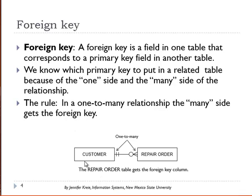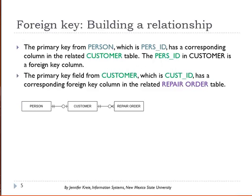So we will take the primary key from customer and put it in repair order. The primary key from person, which is pers ID, has a corresponding column in the related customer table. This is a one-to-one relationship, and technically in one-to-one you can put the foreign key on either side. But for practical reasons, we have decided to put the foreign key on the customer side. The pers ID column in customer is the foreign key column.